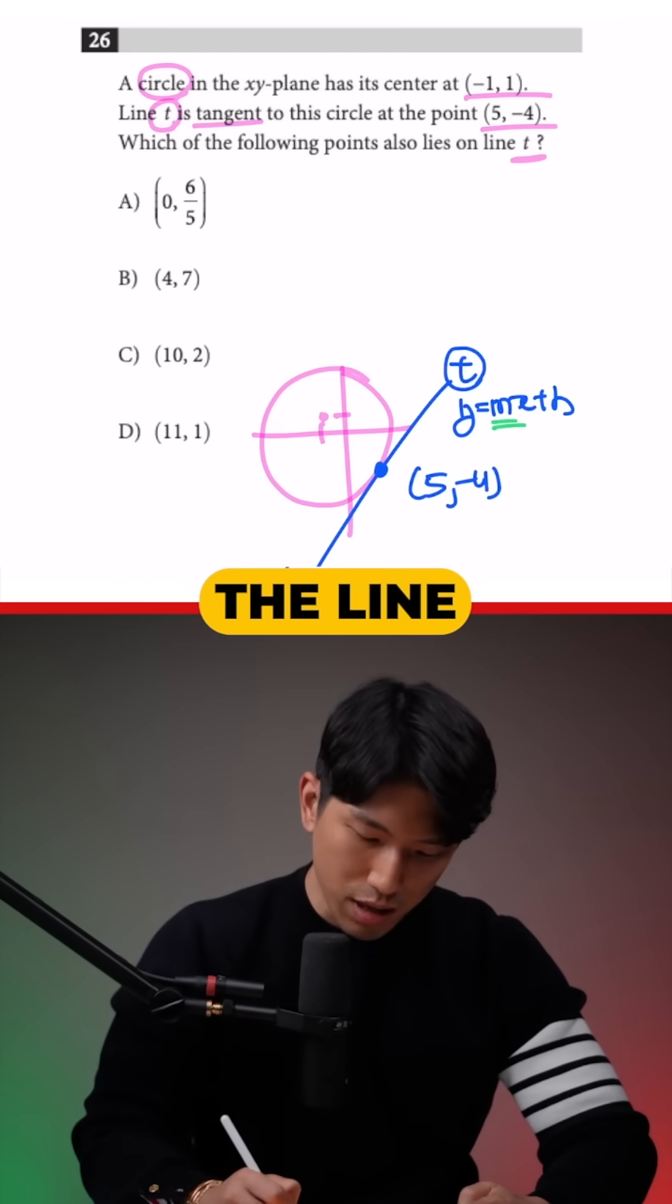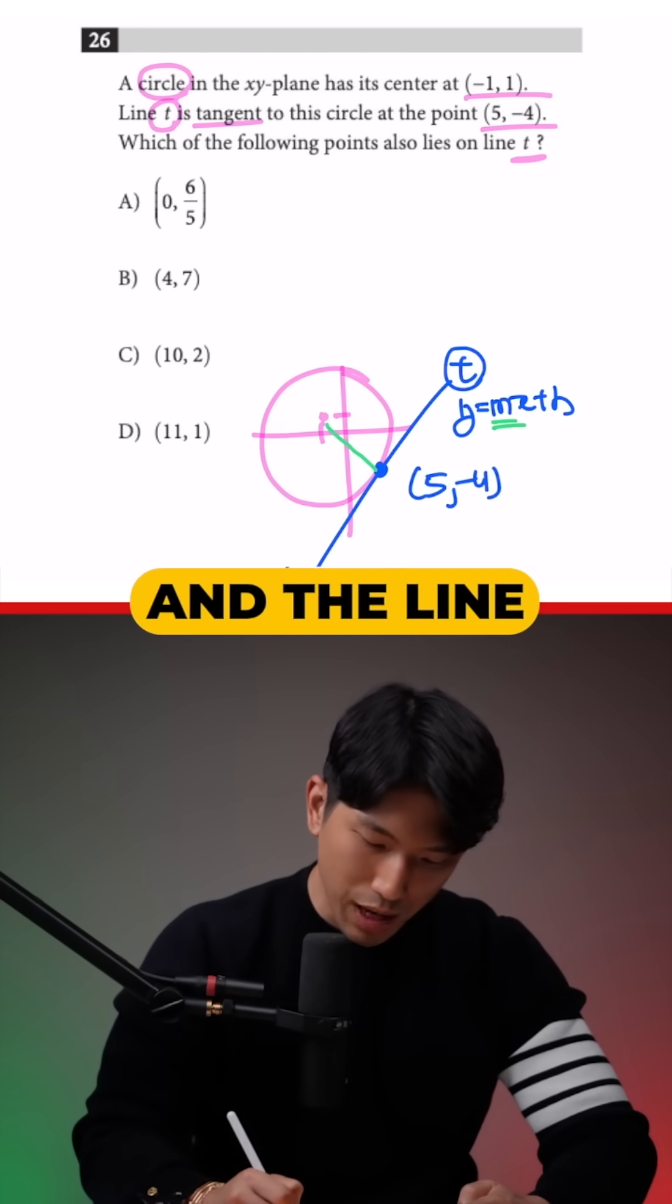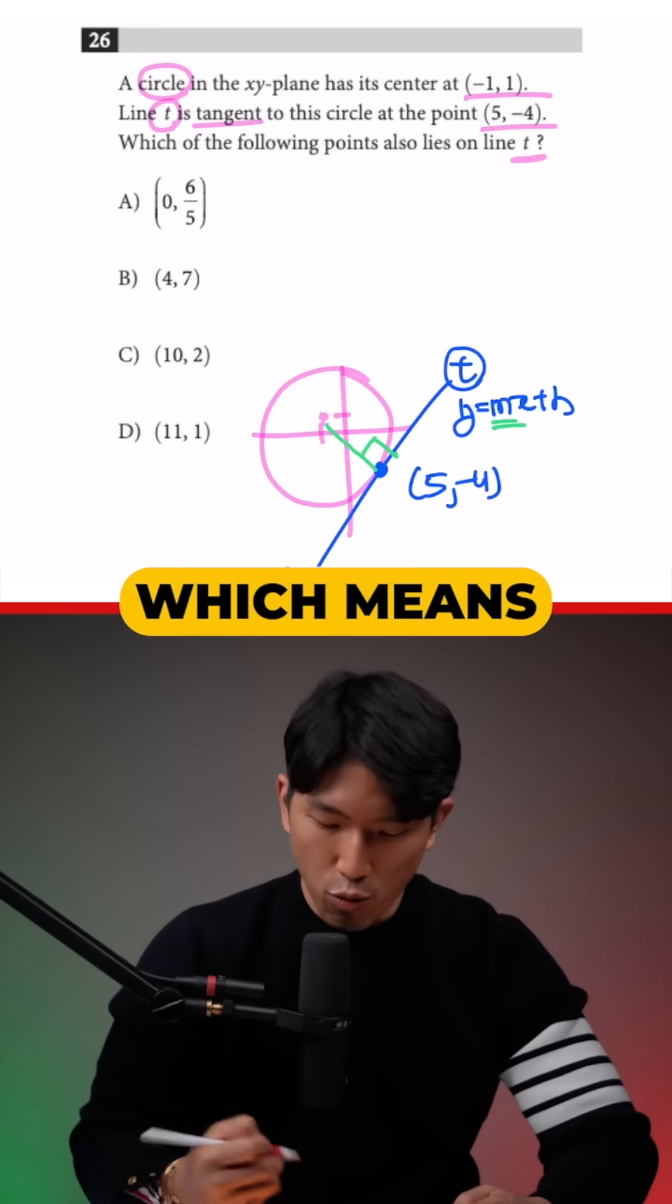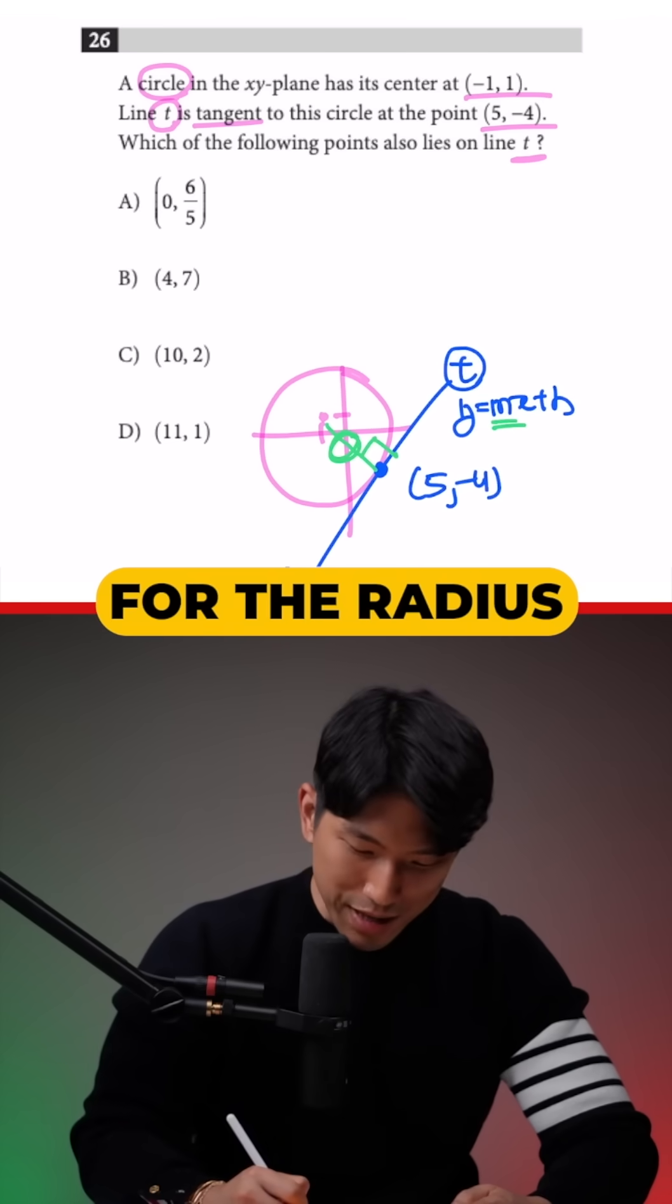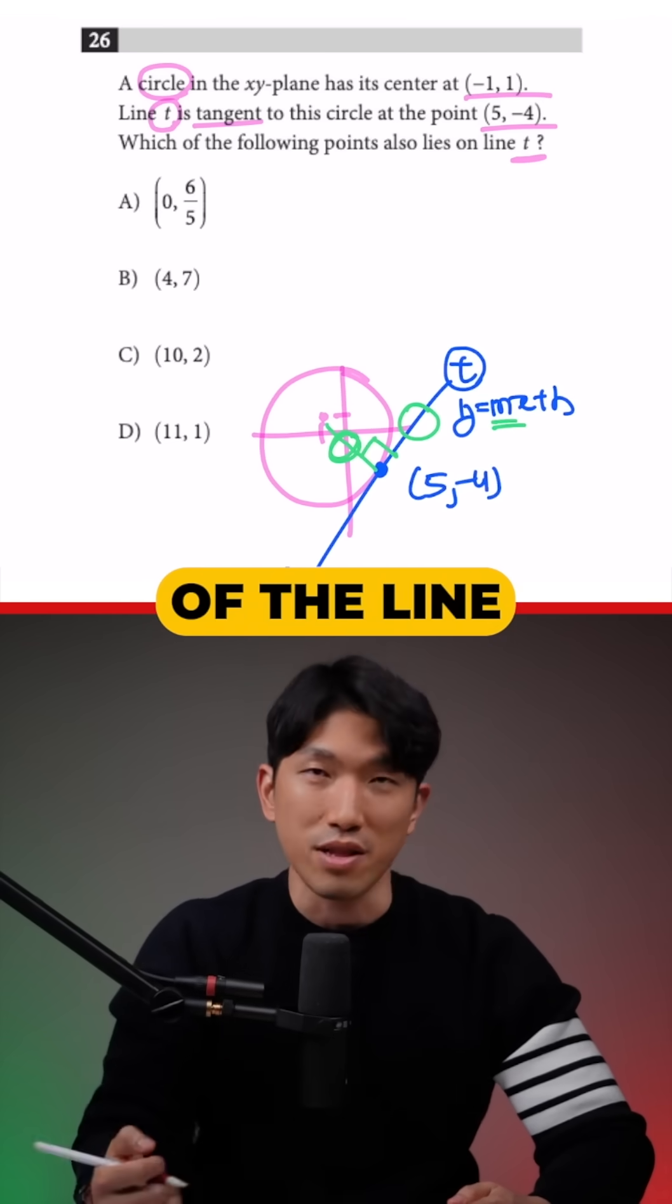To find the slope, we know that the line is tangent to the circle, which means the radius of the circle and the line are going to be perpendicular. This means we need to find the slope for the radius, negative reciprocal it, and that's going to represent the slope of the line.